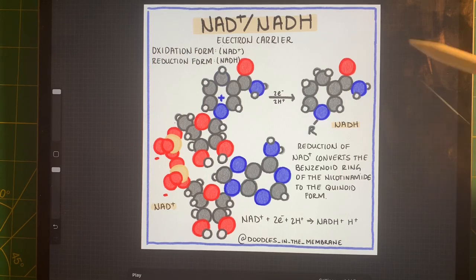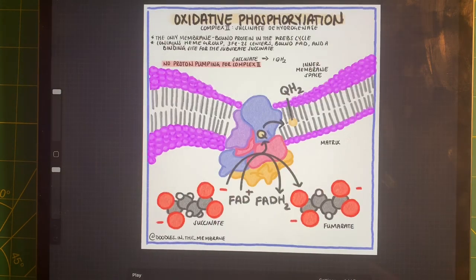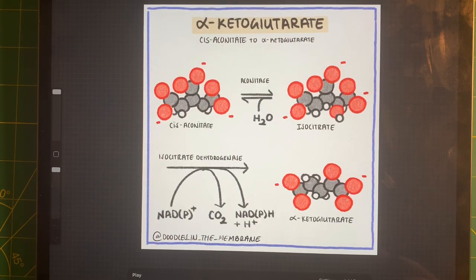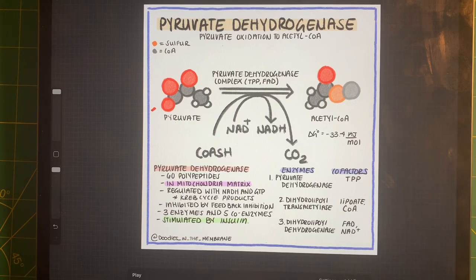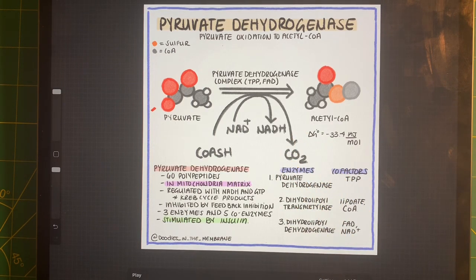These NADHs are really important, and moving on we're going to see them in the Krebs cycle and how they feed into the different protein complexes. Let's go back to talking about acetyl-CoA. We went from something that had three carbons to something that now has two, because this carbon got fully oxidized. Pyruvate reacts with pyruvate dehydrogenase to form acetyl-CoA, and acetyl-CoA is what's going to enter the Krebs cycle.